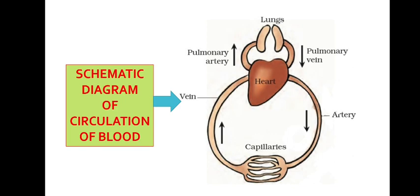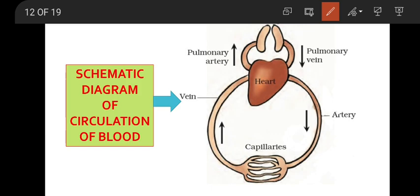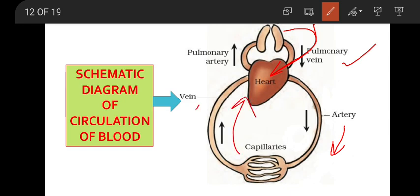Lungs send oxygenated blood to the heart. That oxygenated blood comes to the heart through pulmonary veins. Once the blood comes to the heart, it is taken by arteries to the capillaries, oxygen is taken by cells, and carbon dioxide is collected back and goes to the heart by veins. So arteries carry oxygenated blood and veins carry carbon dioxide blood — except the pulmonary vein, which carries oxygenated blood, and the pulmonary artery, which carries carbon dioxide blood.